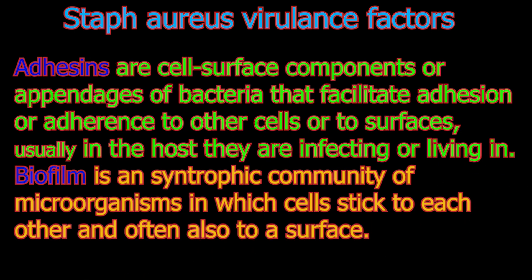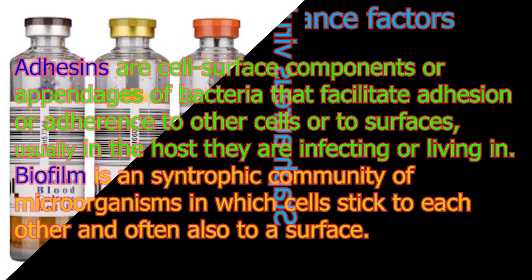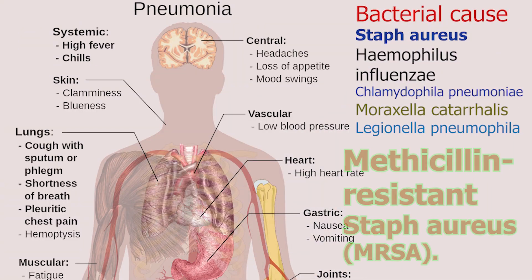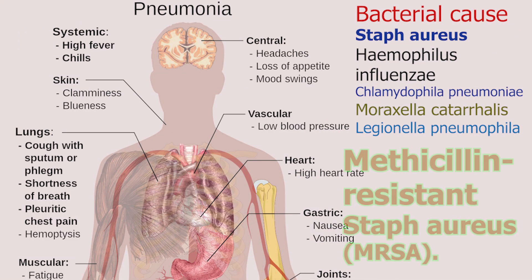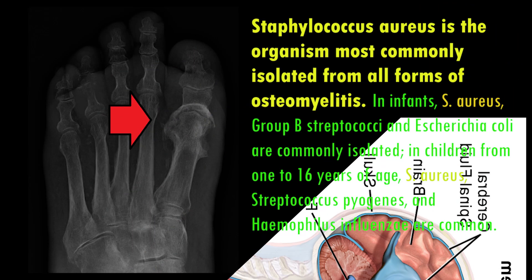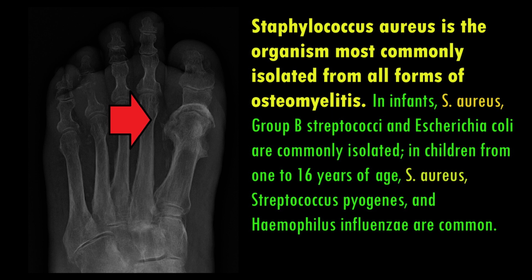Let's check the samples expected to contain Staphylococcus aureus. Blood culture: in most infections such as in patients with undrained abscesses, bacteria can be found intermittently in the bloodstream. The causative agents of meningitis, pneumonia, pyogenic arthritis, and osteomyelitis are often recovered from blood during the early course of these conditions.